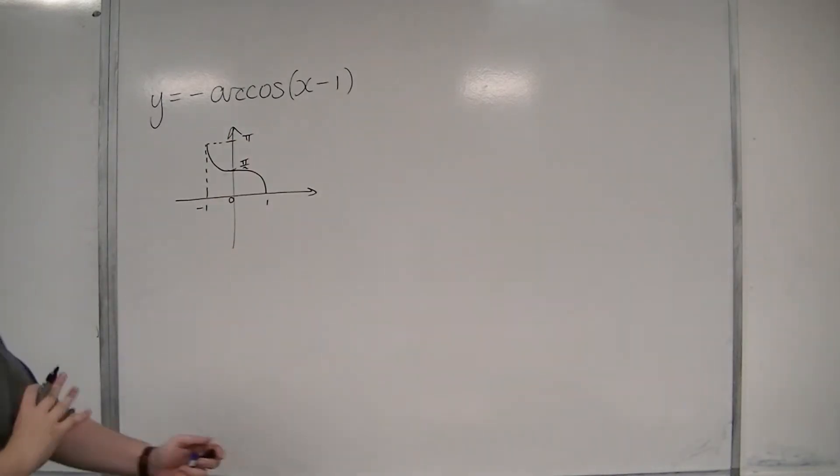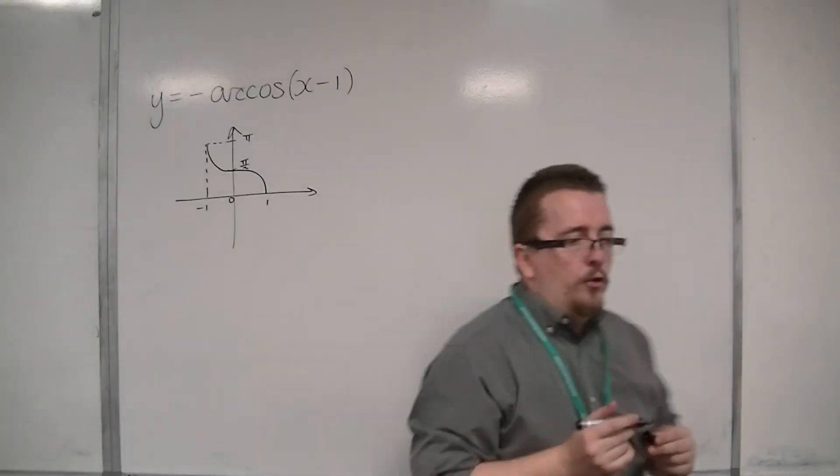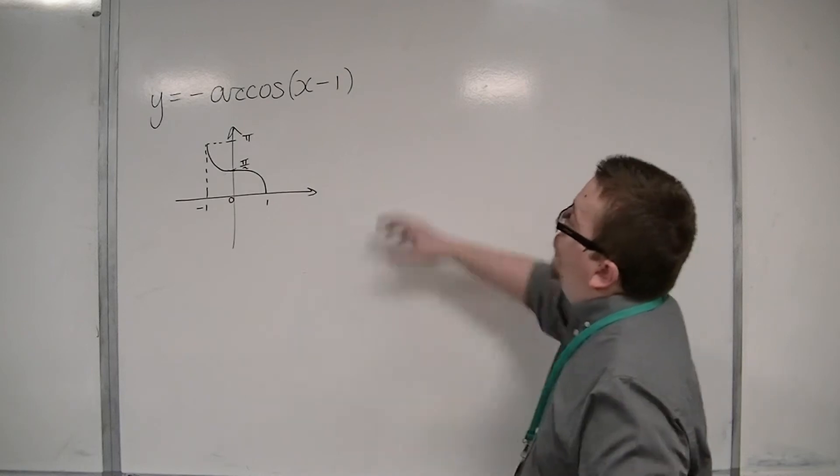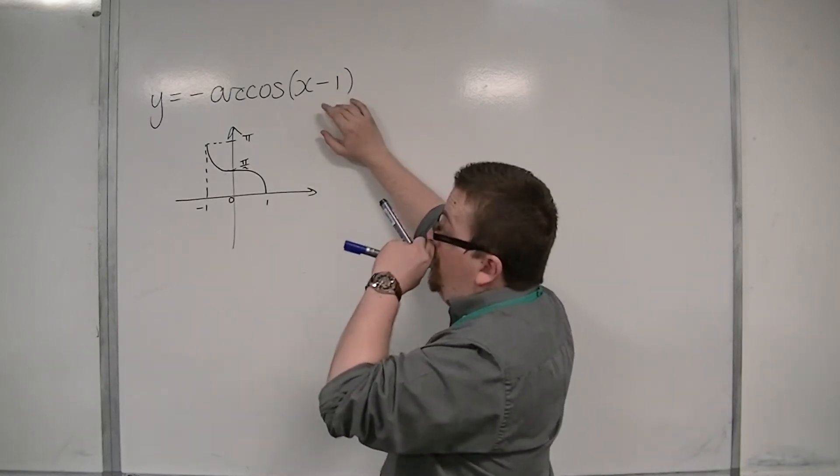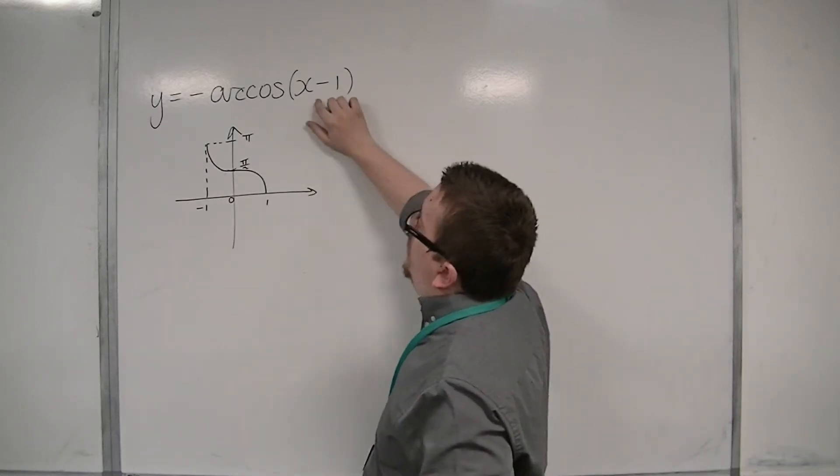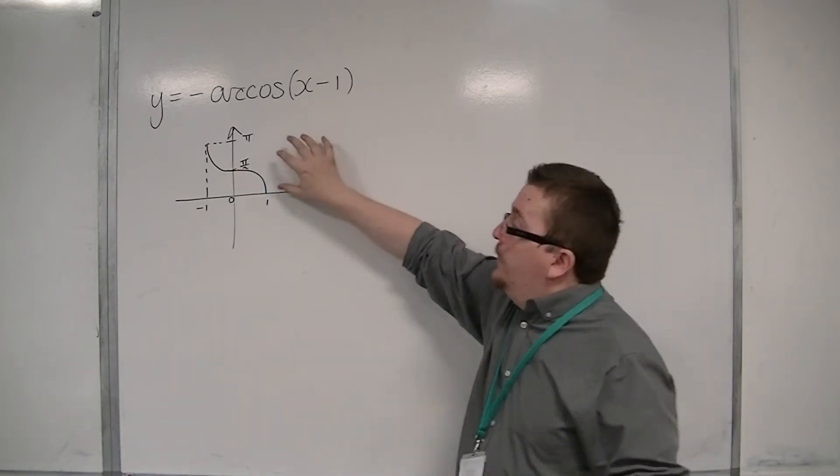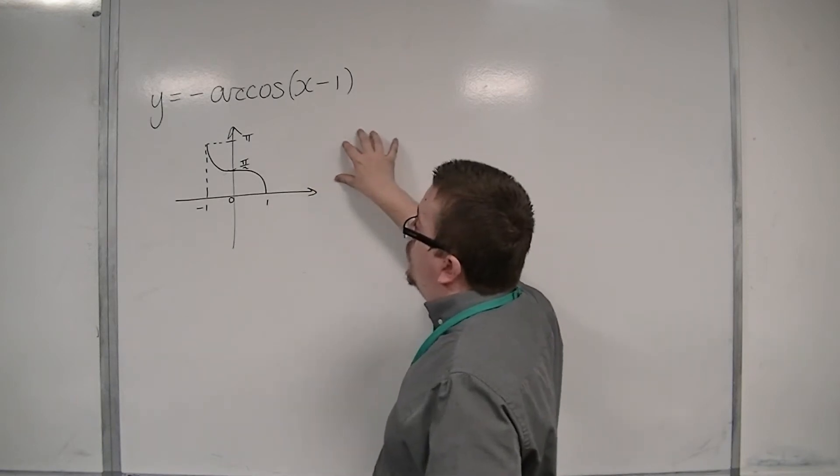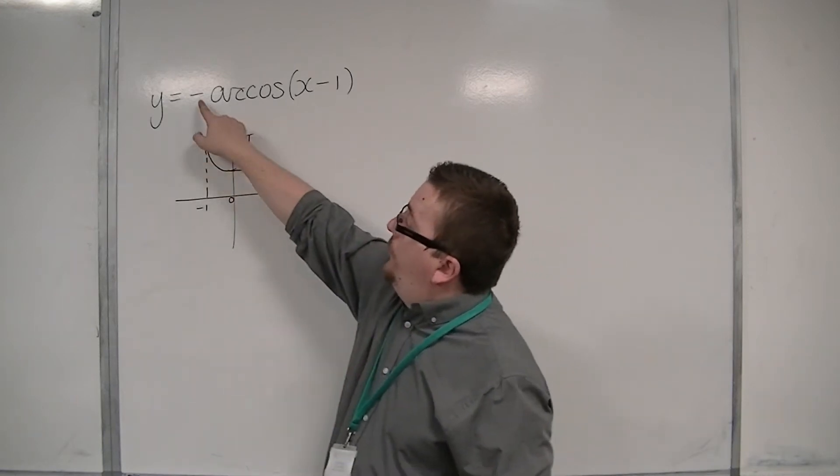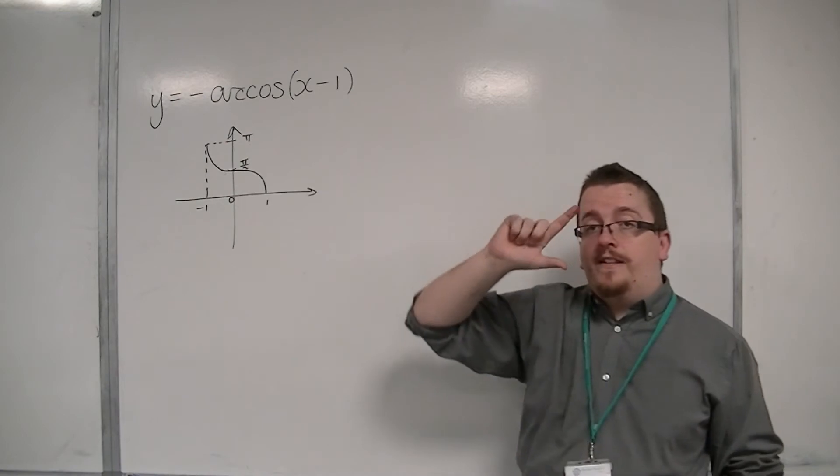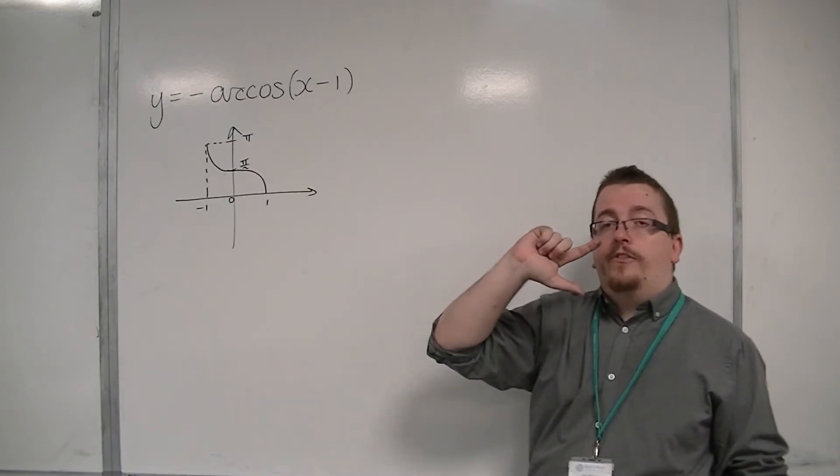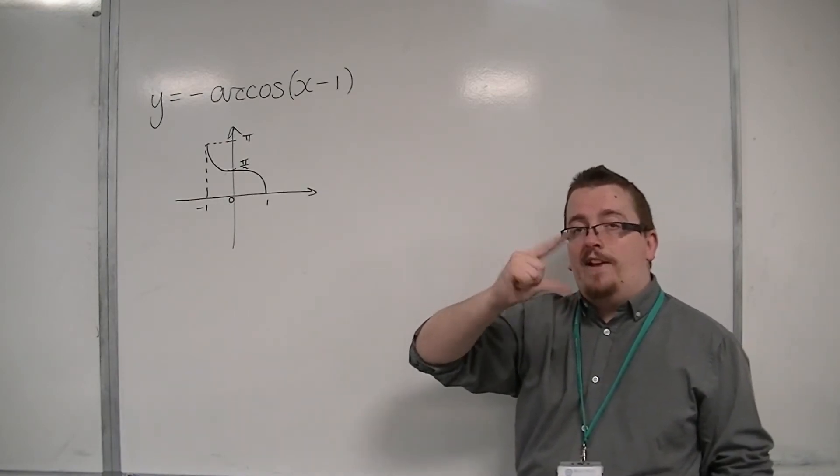Okay, so what we're going to do is transform this graph. You can do these in either order. You can see that means we've got a translation by the vector 1, 0, so this graph is going to shift along 1 to the right. And this means it's affecting the y's, a reflection, so it's going to be a reflection in the x-axis.